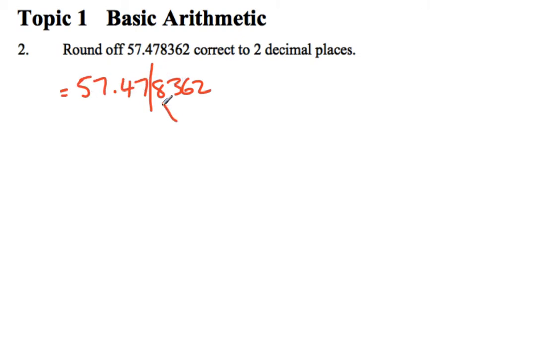But what we've got to do is check that next value. It's called the critical value. And if that critical value is 5 or more,